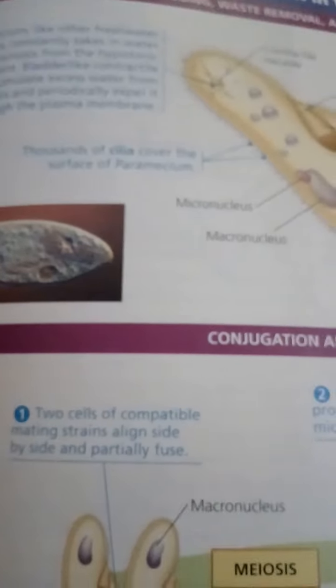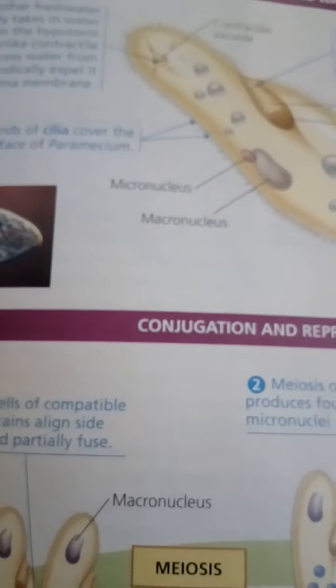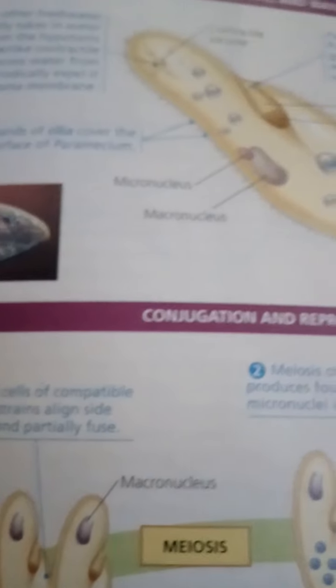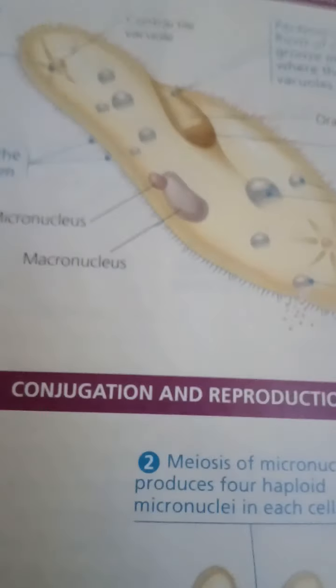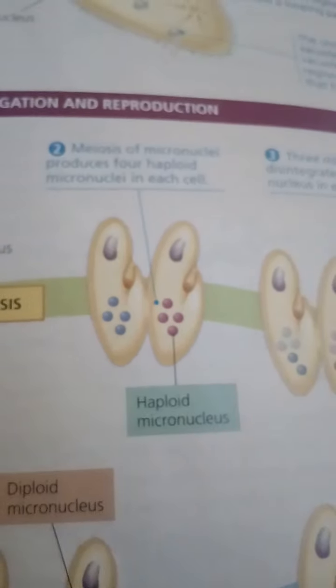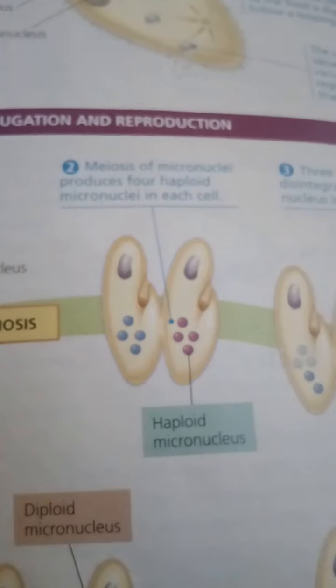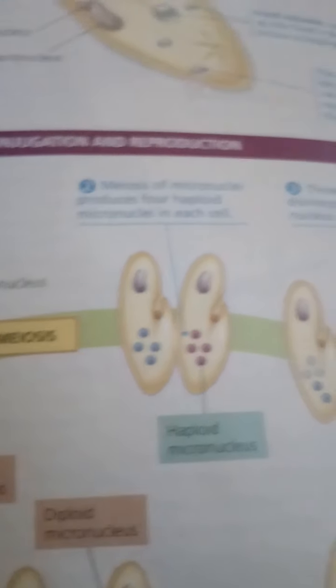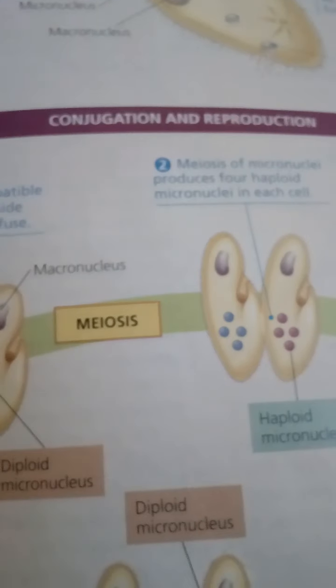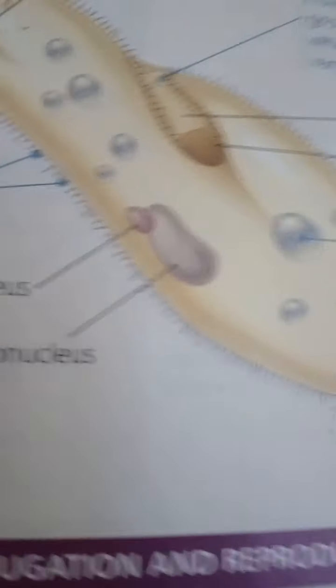A distinctive feature of ciliates is the presence of two types of nuclei: large macronuclei and tiny micronuclei. A cell may have one or more nucleus of each type. Each macronucleus typically contains dozens of copies of the ciliate's genome. The genes are not organized in chromosomes but instead are packaged in smaller units, each bearing many duplicates of just a few genes. Macronuclear genes control everyday functions of the cell such as feeding, waste removal, and maintaining water balance, as explored in the ciliate Paramecium.